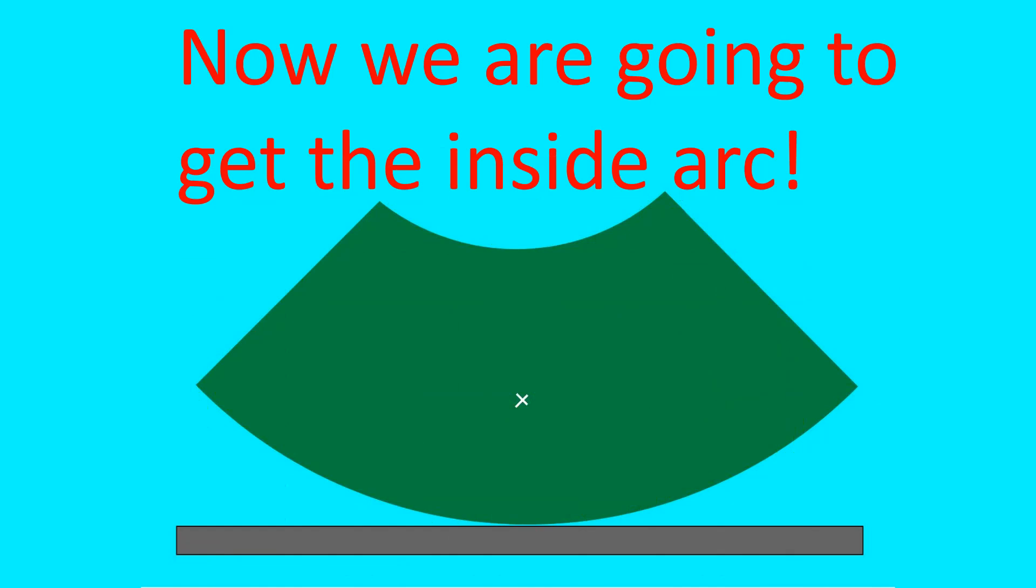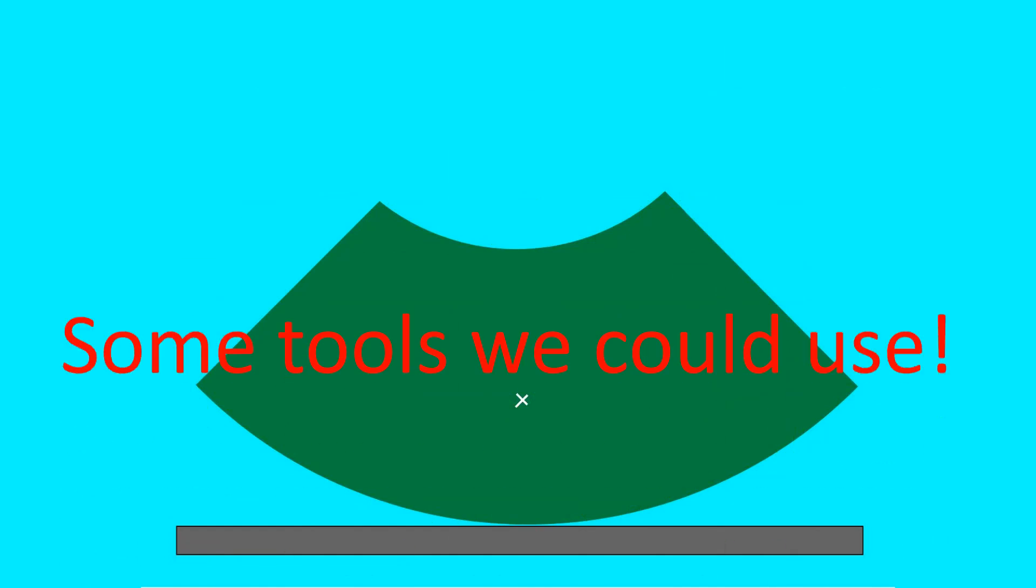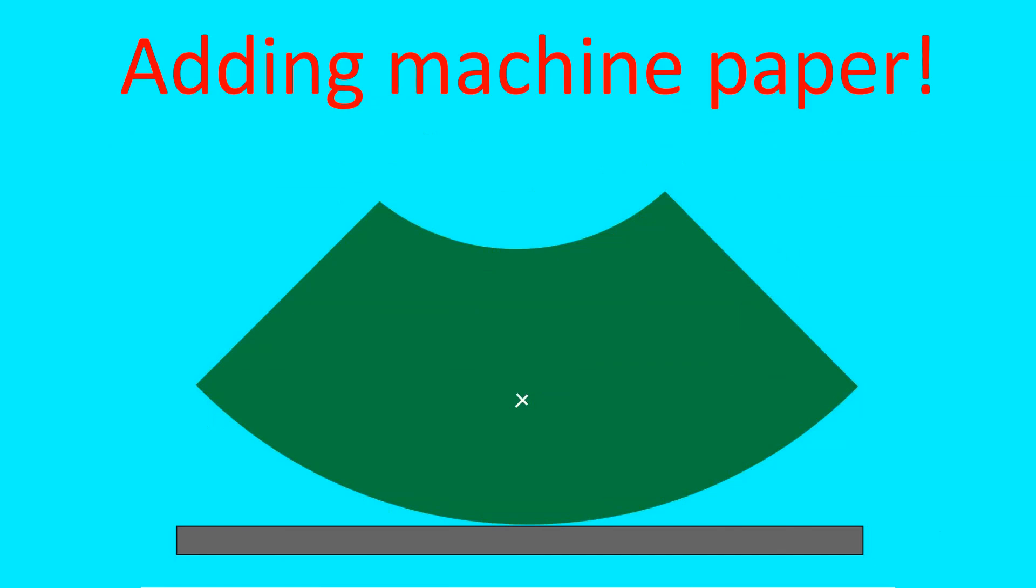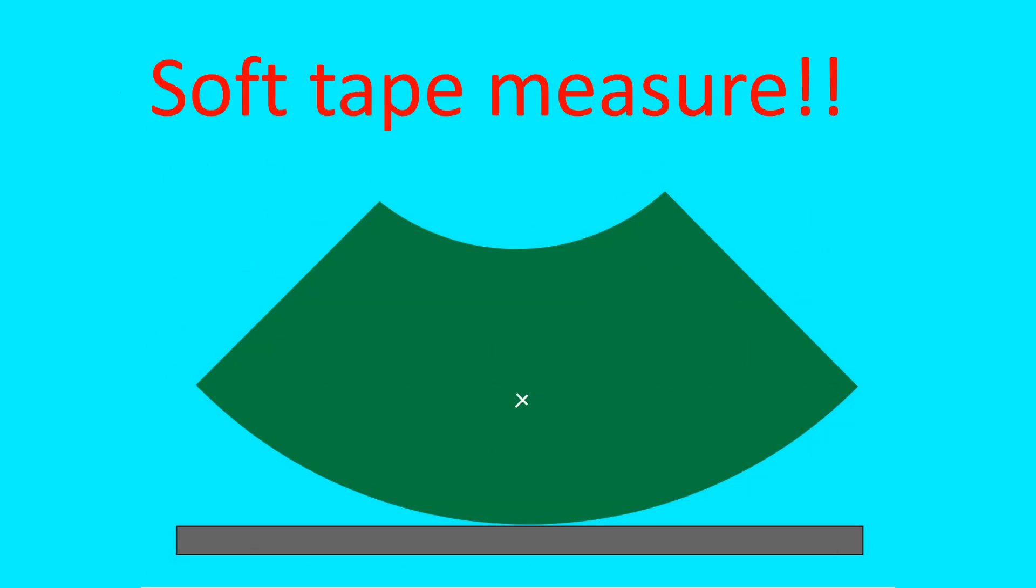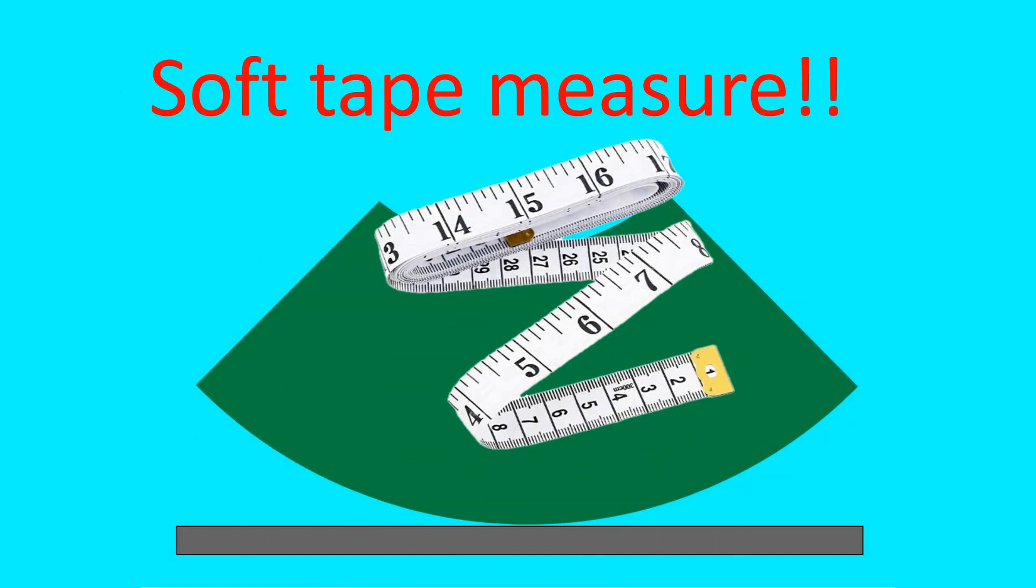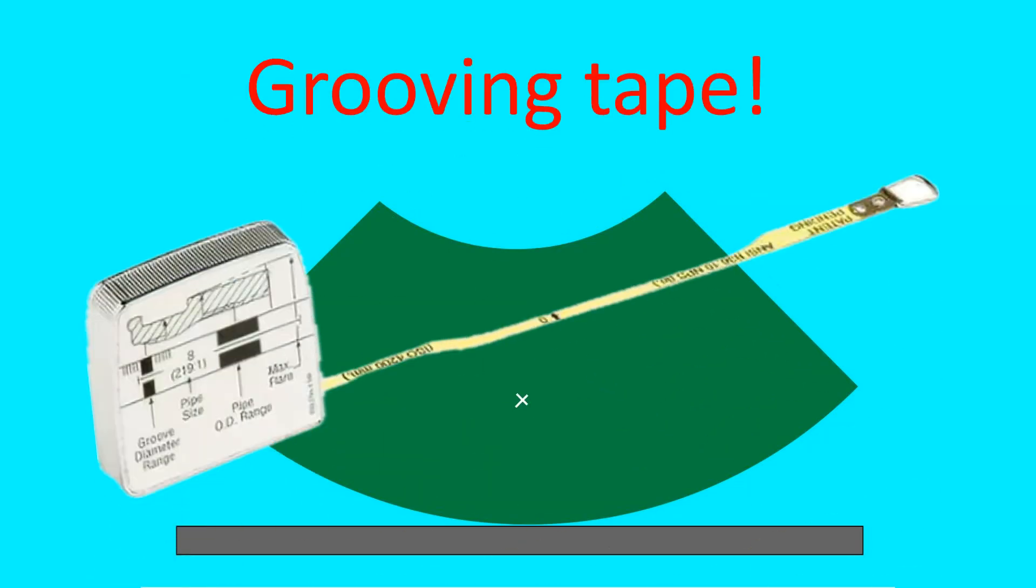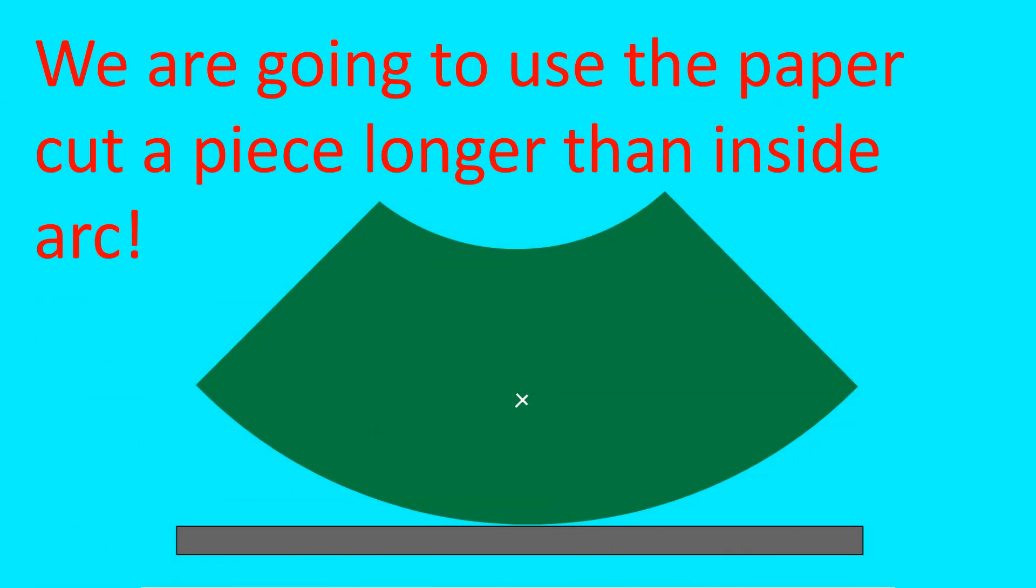So now we're going to get the inside arc. Some tools we could use to do that are adding machine paper, soft tape measure, 50 foot tape, a grooving tape. But we're going to use the paper.